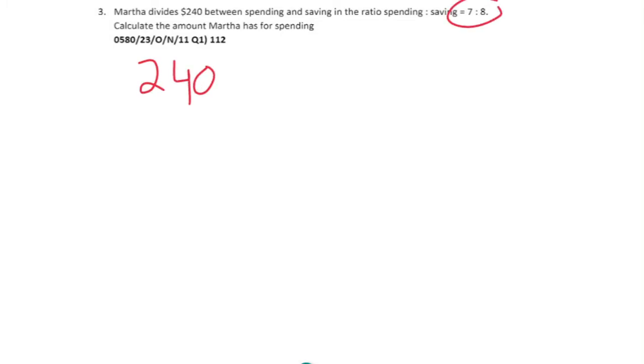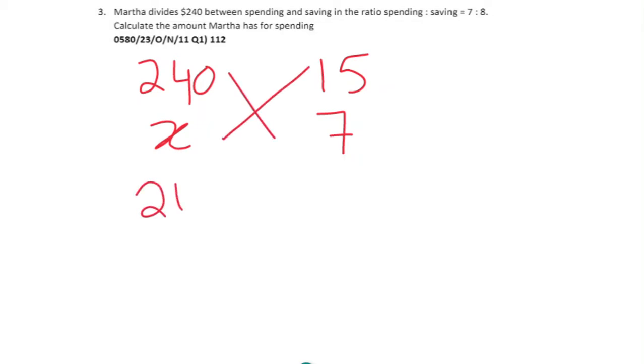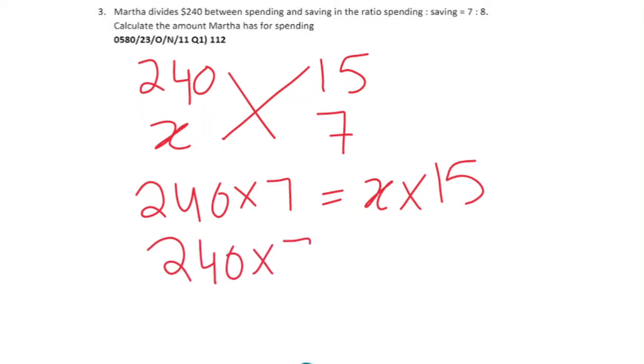Question 3: Martha divides $240 between spending and saving in the ratio 7:8, meaning if she spends $7 she saves $8. $240 represents 7 plus 8, which is 15 parts. To calculate the amount Martha has for spending: cross multiply 240 times 7 equals x times 15, so 240 times 7 divided by 15.